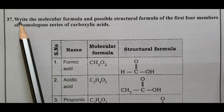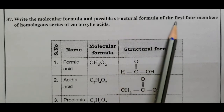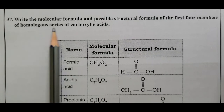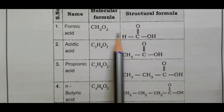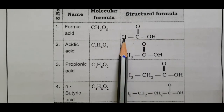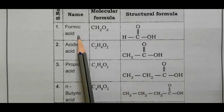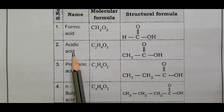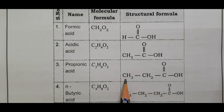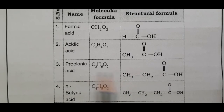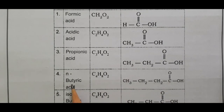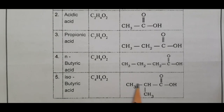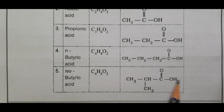Question number 37: Write the molecular formula and possible structural formula of the first four members of the homologous series of carboxylic acids. The carboxylic acid functional group is COOH. 1 carbon: HCOOH (formic acid). 2 carbon: CH3COOH (acetic acid). 3 carbon: C2H5COOH (propionic acid). 4 carbon: C3H7COOH (butyric acid), which also has an isobutyl (isopropyl) structural isomer.